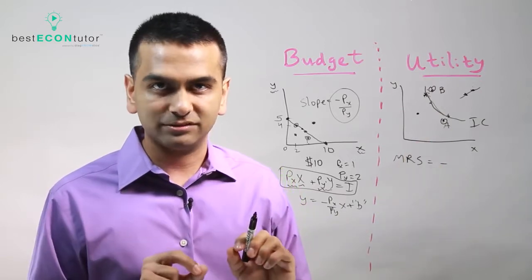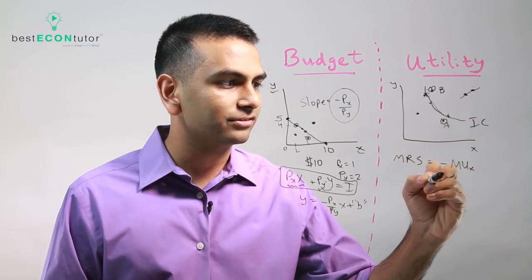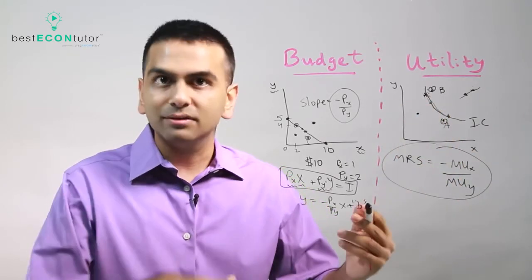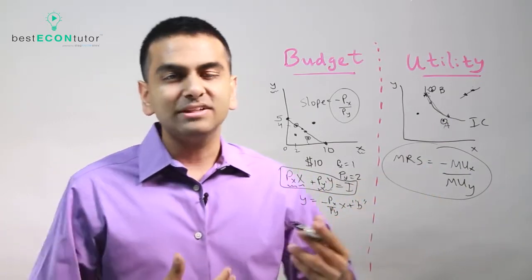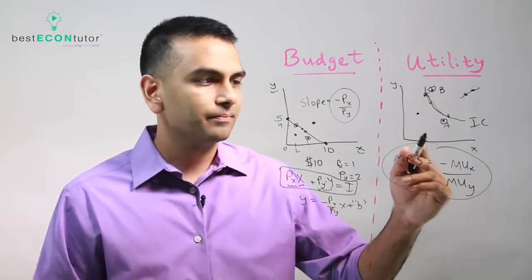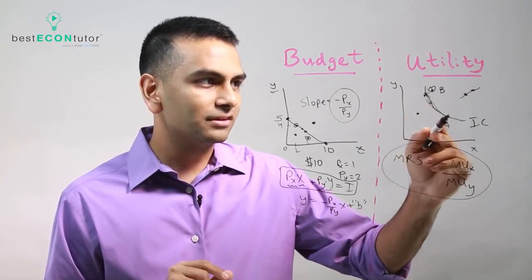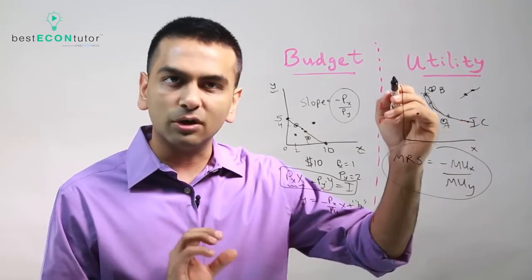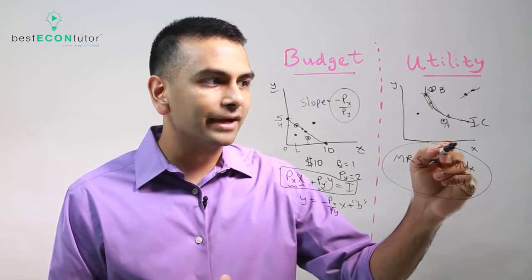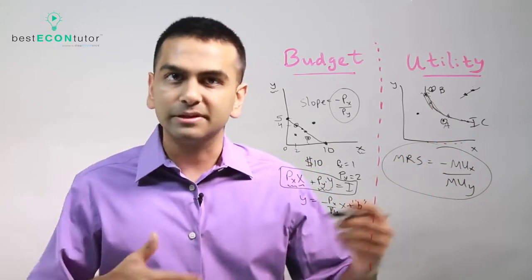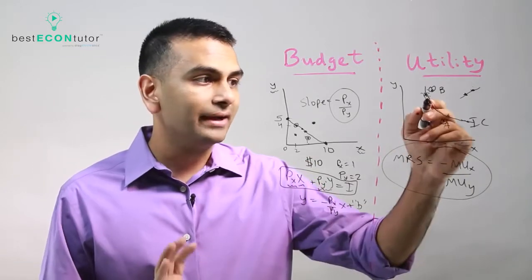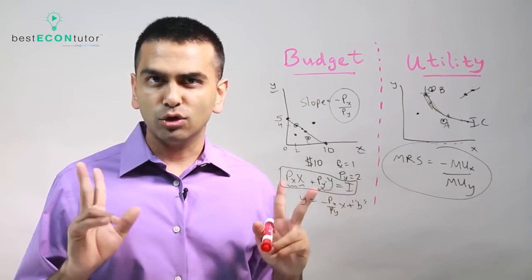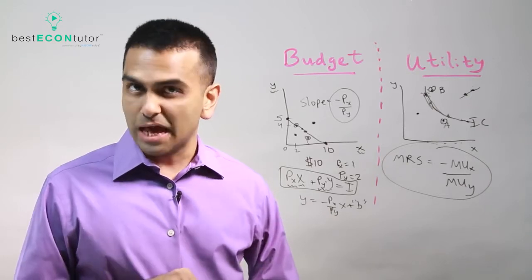The slope of an indifference curve is always negative MUx over MUy — marginal utility of good X over marginal utility of good Y — and this equals the MRS. Marginal utility means the extra happiness from one more unit of a good. This also explains why indifference curves get less steep as you move right: as you have more of good X, like more pizza, each additional slice becomes less valuable — marginal utility decreases — so the slope gets smaller and the curve flattens.